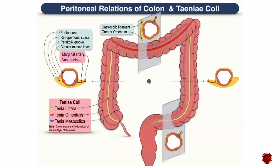This is a good image showing the relations of the three different tinea with the different portions of the large intestine, with color coding. Tinea Libera is given a yellow code, Tinea Omentalis has been given a red color code, and Tinea Mesocolica is the blue one.